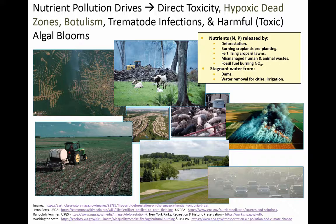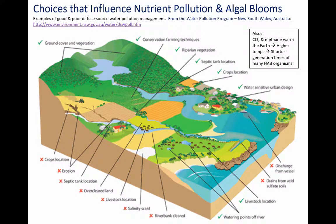Stagnant water from dams and water removal — so that streams have less flow — can also set the stage for problems, especially toxic algal blooms. These problems are far from controlled right now. There's a lot of work to be done. This slide shows some common errors in management that lead to problems, as well as some areas where interventions have been implemented to lessen those problems.